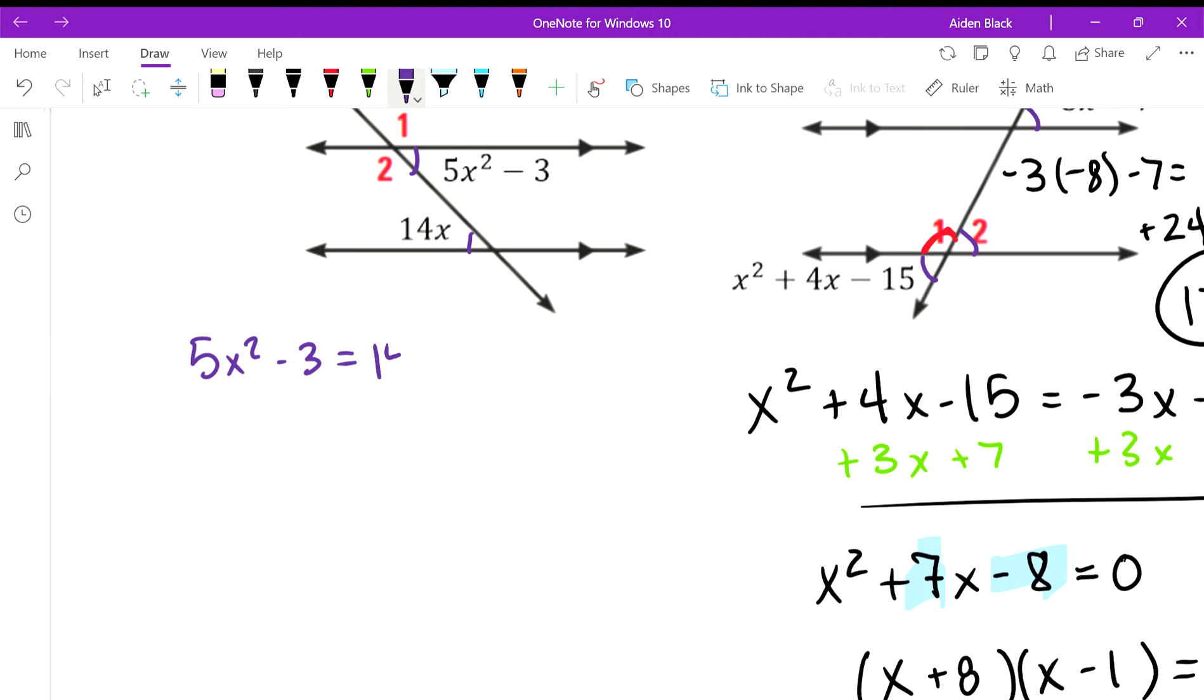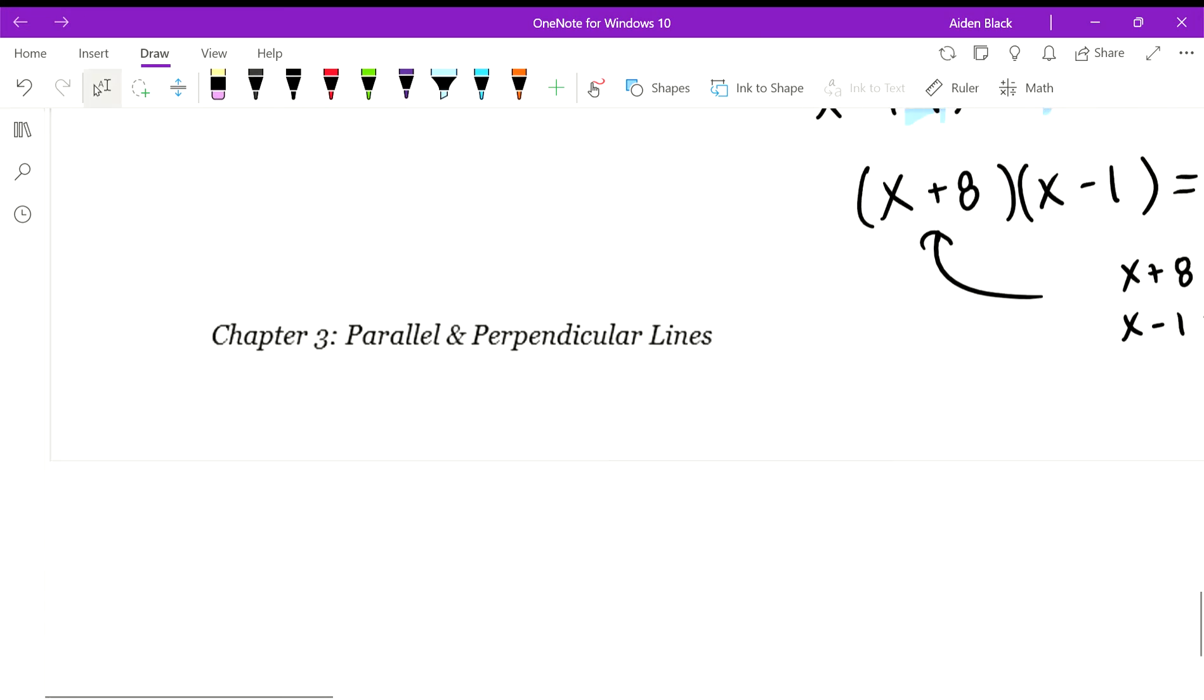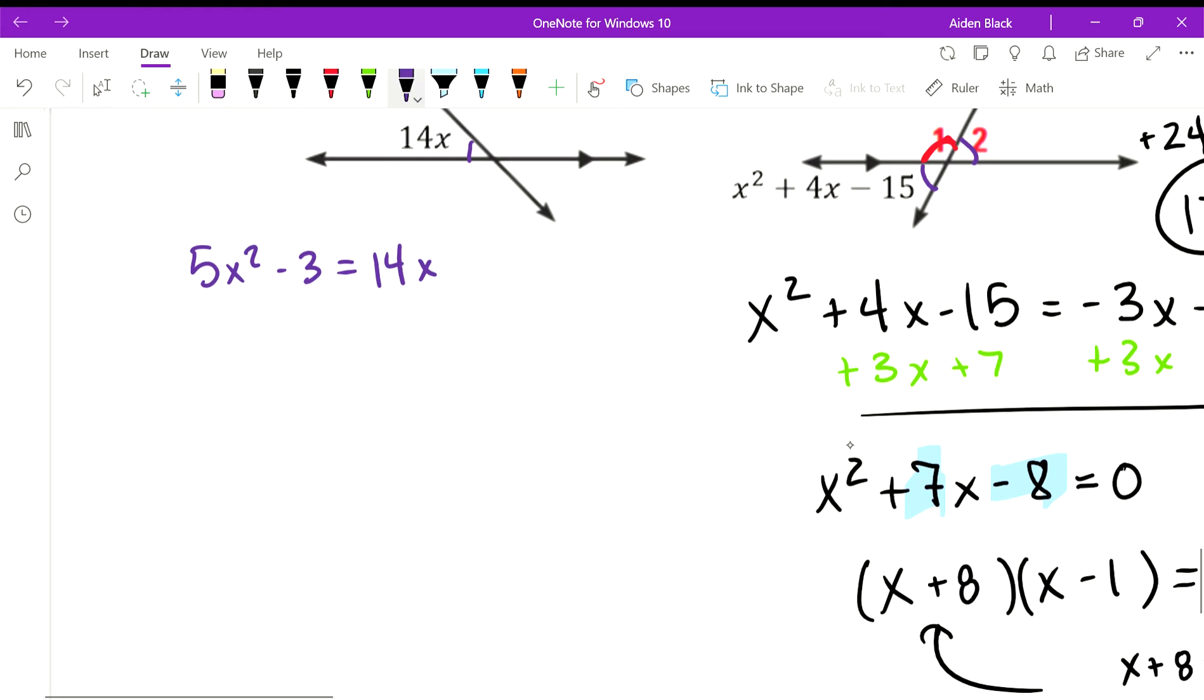So we can write the following equation. Again, we want it to look as a quadratic does: ax²+bx+c=0. So we subtract 14x from both sides and -3 from both sides. So here's our quadratic: 5x²-14x-3=0.